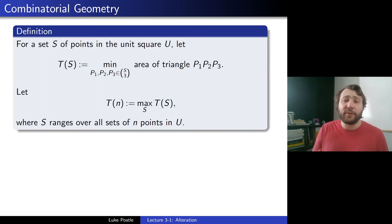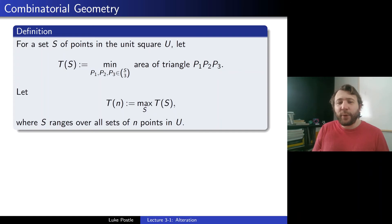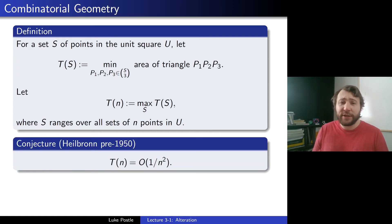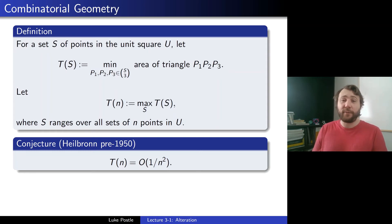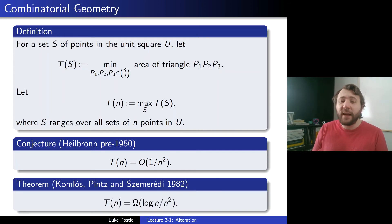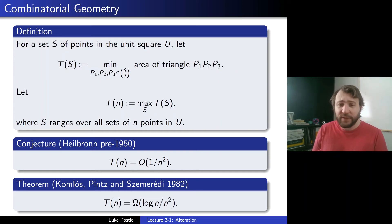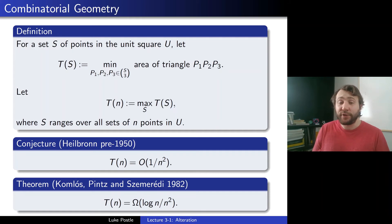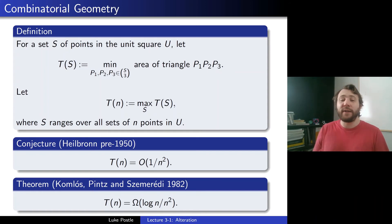Heilbronn conjectured, at least pre-1950, that T(n) should be at most 1 over n squared — that for every set of points, you should be able to find a small triangle. This turned out to be false. Komlós, Pintz, and Szemerédi proved in 1982 that T(n) is actually Ω(log n over n squared), a log n factor bigger than Heilbronn had conjectured. They did this using a probabilistic construction, constructing a set of points without small triangles exceeding what Heilbronn conjectured as an upper bound.